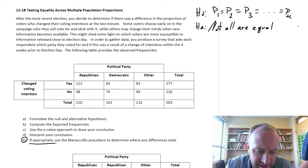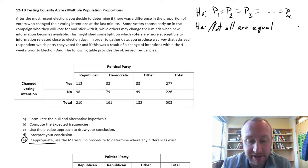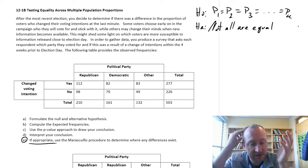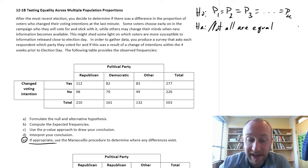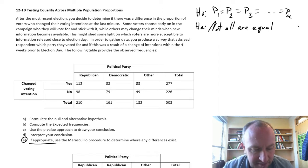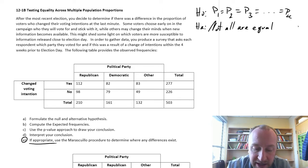Here we're looking at the recent election. So we decide to determine if there was a difference in the proportion of voters who changed their mind at the last minute. I thought throughout the whole campaign I was going to vote for this party, and then at the last minute I changed my mind. Some voters choose early on in the campaign who will vote for and stick with it. Others may change their mind when new information becomes available.